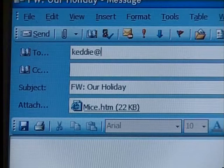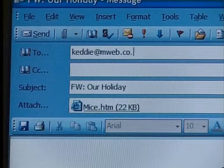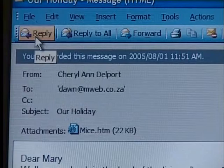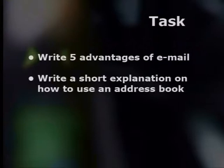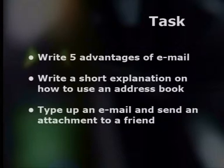All you have to do is add in the address of the person you want to forward the email to and hit send/receive. Now for today's task: write five advantages of email, write a short explanation on how to use an address book, and type up an email and send an attachment to a friend. Thank you for joining us in this exciting lesson on e-communication. Don't forget to visit our website for more information. See you next time when we investigate the rules for proper e-communication. Goodbye.